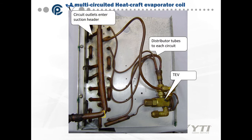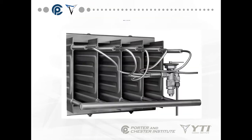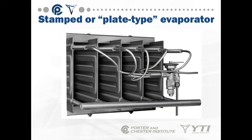The distributor sends refrigerant through a tube to each circuit, and the circuit outlets enter a suction header that returns to the suction line. A stamped or plate-type evaporator also uses a distributor, but instead of fins and tubes, it uses stamped plates where two sections are put together. These are used in ice machines and to cool liquids.